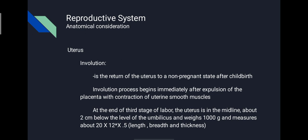There are many changes that occur in the reproductive system both anatomically and physiologically. We will discuss anatomical changes here, starting with involution of the uterus. Involution is the return of the uterus to a non-pregnant state after childbirth. The involution process begins immediately after expulsion of the placenta with contraction of uterine muscle. Immediately following childbirth, the uterus becomes firm and retracts with alternate hardening and softening. The fundus lies about 13.5 cm above the pubic symphysis and weighs 1000 grams.